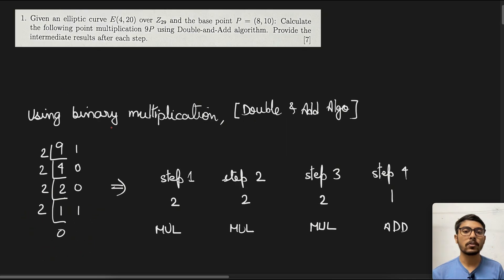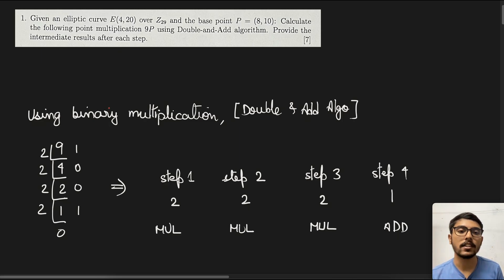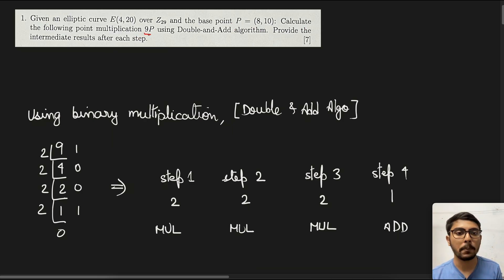Today we are going to discuss a very important and interesting topic which is elliptic curve cryptography. So first we read the question: given an elliptic curve E(4,20) over Z29 and the base point P(8,10), calculate the point multiplication 9P using the double and add algorithm, providing the intermediate results after each step.